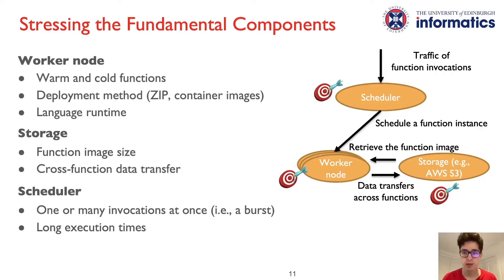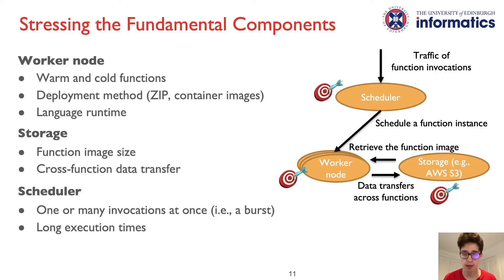One can stress the storage service with the following parameters. First, one can vary the size of the function image, which is the necessary initialization state of a function. A function image size is configured by adding a random content file to the zip or container image upon function deployment. Second, one can deploy a producer function that invokes another consumer function while transferring a random content payload of a configurable size. Finally, to stress the scheduler, Stellar steers function invocation traffic of a configurable shape. For example, Stellar can invoke a function once at a time, or alternatively issue bursts of several invocations at once to the same function. Stellar also specifies whether a function should return immediately or execute for some time, modeled by busy spinning in the user code.